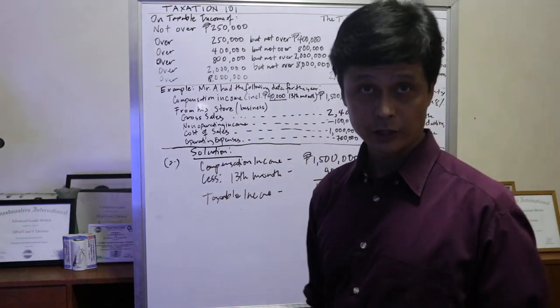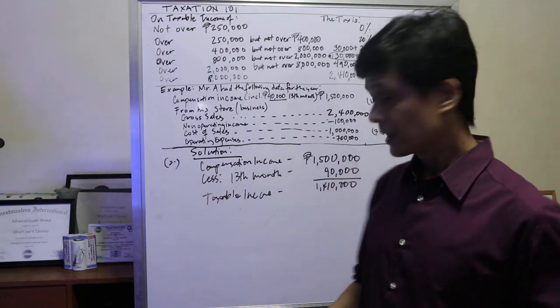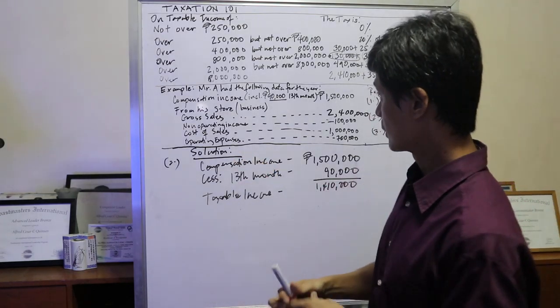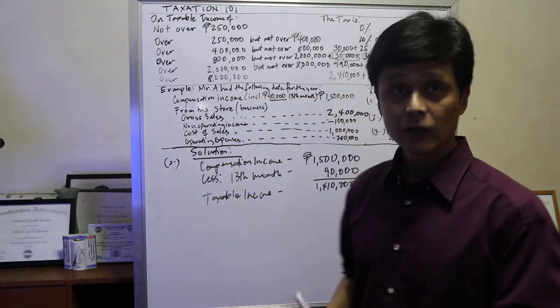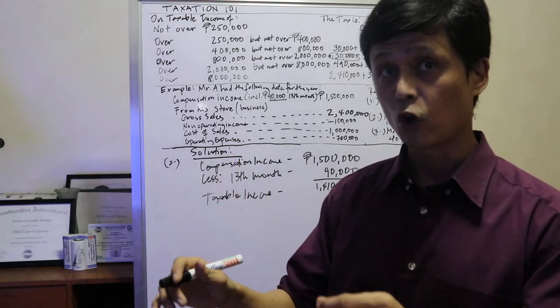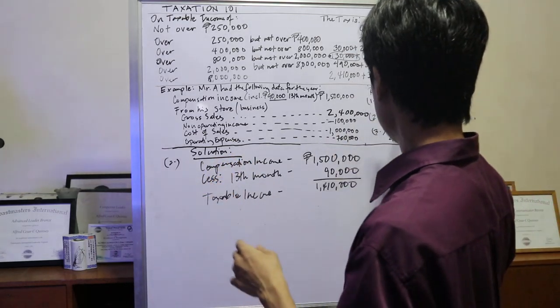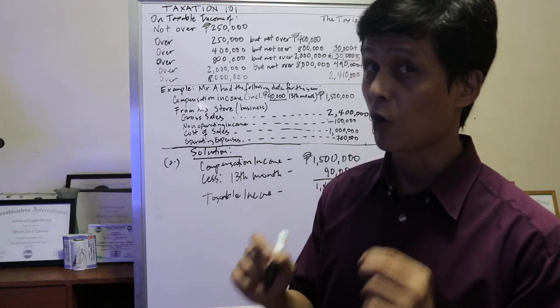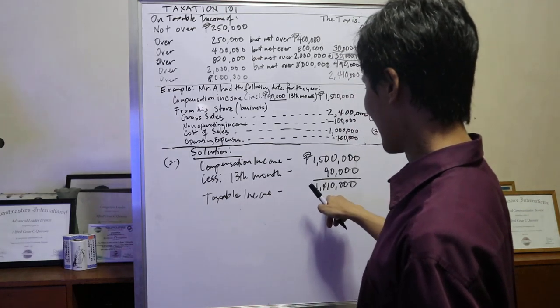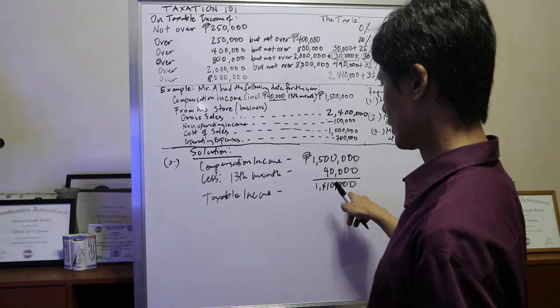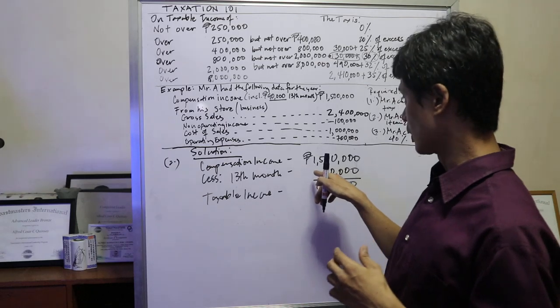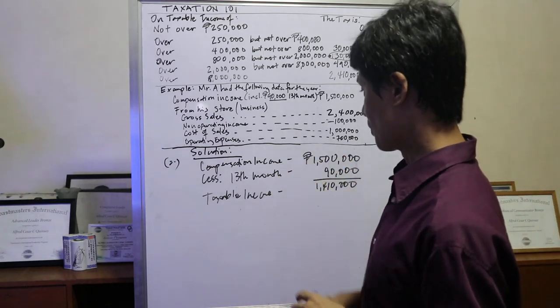Now, look at this. There's already a partial solution. Incidentally, that partial solution was the same as the previous one because in this part on the compensation income, this has not changed whether the taxpayer opted for the 8% or the itemized deduction, still the same with the compensation income. So taking from there, we have the taxable income of 1,410,000. This is obtained by deducting the 90,000 13th month from the 1.5 million compensation income.